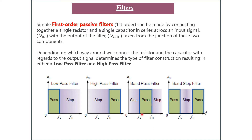A band-pass filter passes a particular range of frequencies between FL (lower cutoff) and FH (higher cutoff). Outside this range — in the lower and higher frequency stop bands — those frequencies are blocked. Only the frequency band between FL and FH is passed.